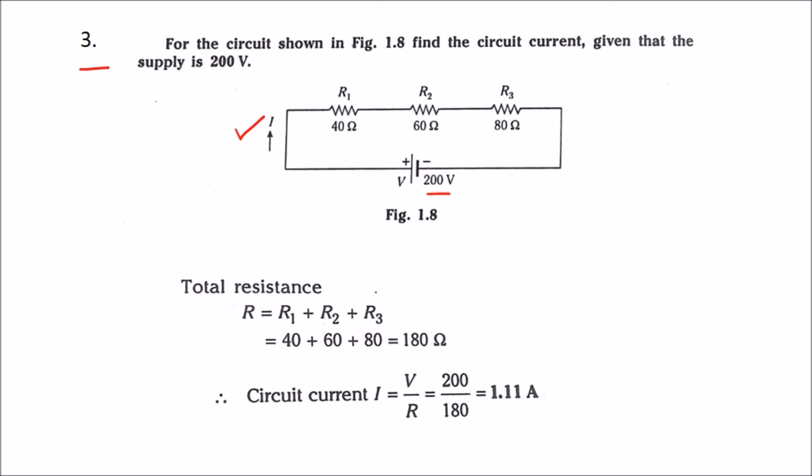So R equals R1 plus R2 plus R3, that is 40 plus 60 plus 80, which equals 180 ohms. We know the relation of current, voltage, and resistance is I equals V by R.